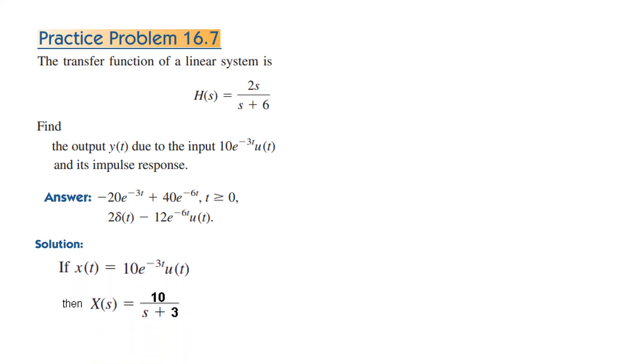So first of all, x(t) is given, so we convert it into Laplace. So it will be 10 over (s+3) for e^(-3t). And so from here, H(s) = Y(s) over X(s), we can find Y(s), that is the output. Putting the value of H(s) which is given here, and X(s) which we calculated from here. And multiplying we get this term. We need to simplify it.